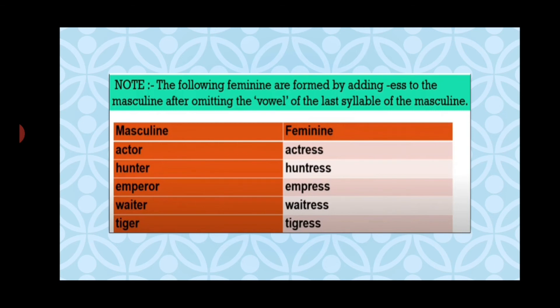Note: the following feminines are formed by adding '-ess' to the masculine after omitting the vowel of the last syllable. For example, 'actor' — the vowel is 'o', so we remove it and get 'actress'. Similarly, 'hunter' becomes 'huntress' (removing vowel 'e'); 'emperor' becomes 'empress' (removing vowel 'o'); 'waiter' becomes 'waitress'; 'tiger' becomes 'tigress'. It is important to learn these words by heart.